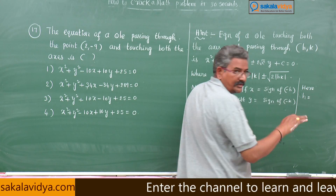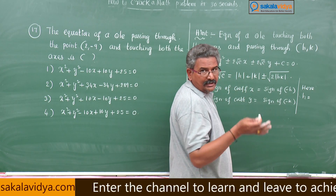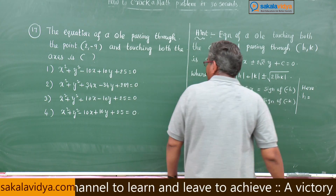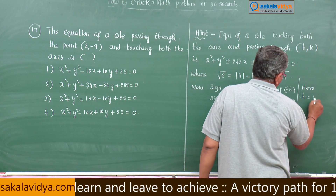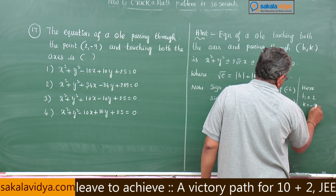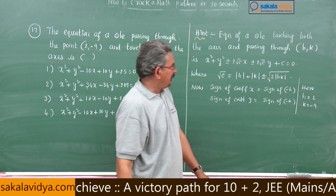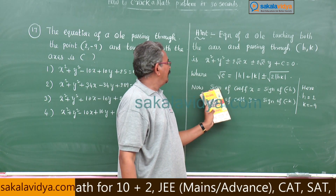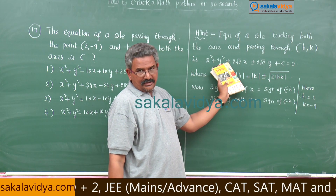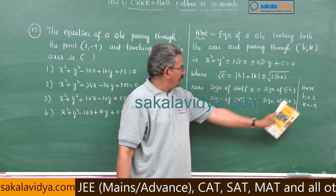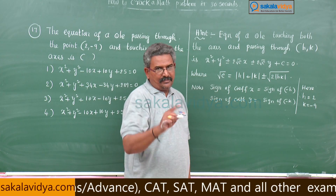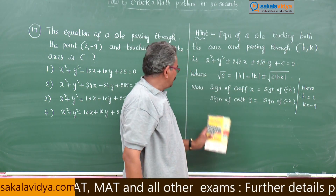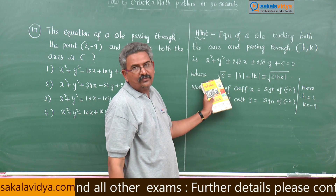Here h = 2 and k = -9. So the sign of -h means -2, so the coefficient of x should be taken as minus. Here k = -9, so minus of minus gives plus 9, so the coefficient of y should be positive.